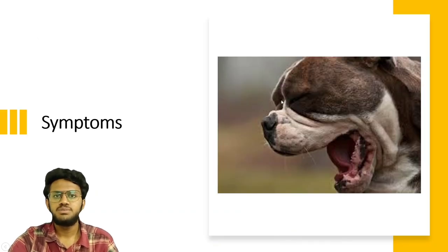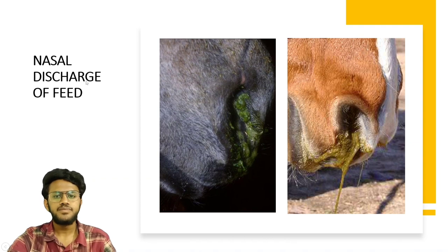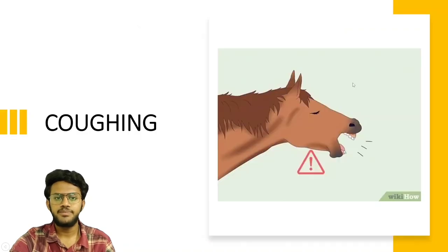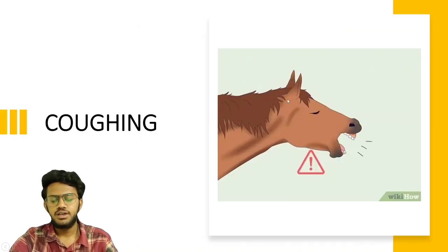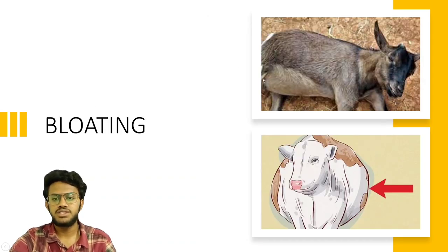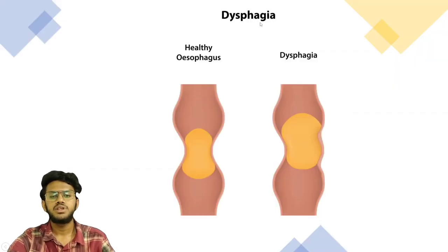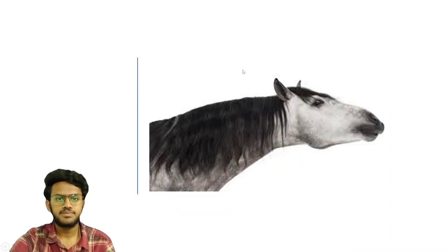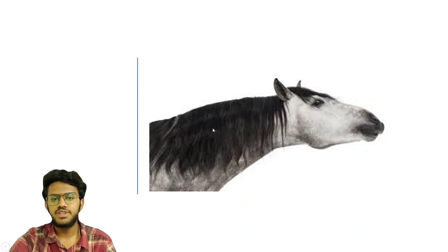Let us discuss some general symptoms of choke. You can observe nasal discharge in any animal suffering from choke. Most animals cough in the case of esophageal obstructions. In cattle and goats, you can see bloating and dysphagia. And in some horses, you can see an erect position of the neck.